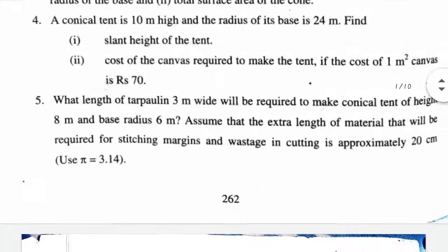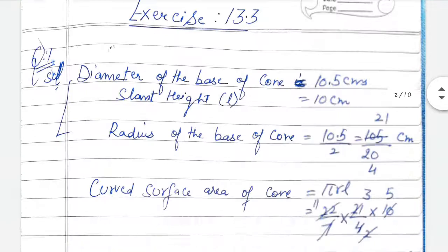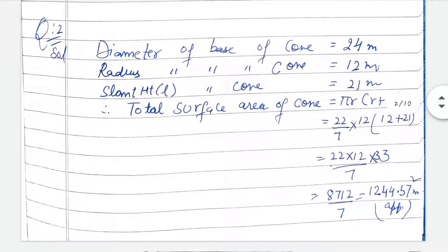Question number two: find the total surface area of a cone. Total surface area formula is πr into (r + l). Its slant height is 21 meters. Diameter is given as 24, so radius is 12. All units are the same. We write the formula directly, solve it, and the answer is 8712 upon 7.